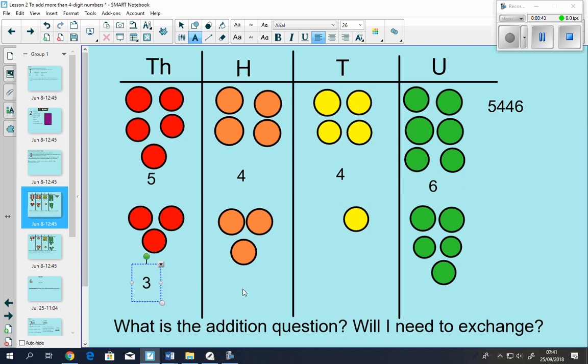And then we have 3,000, 3 hundreds, 1 ten, and 5 units. So the actual question is 5,446 added to 3,315.